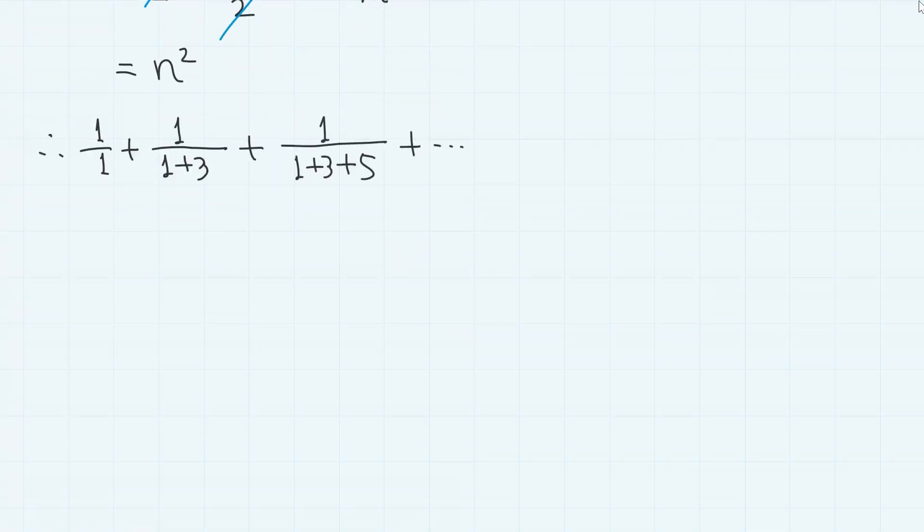This means that our series can be expressed as sigma from n equals 1 to infinity, 1 over n squared. Now, here comes somewhat cheeky and somewhat disappointing part.